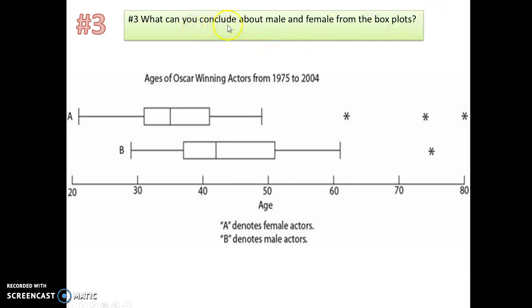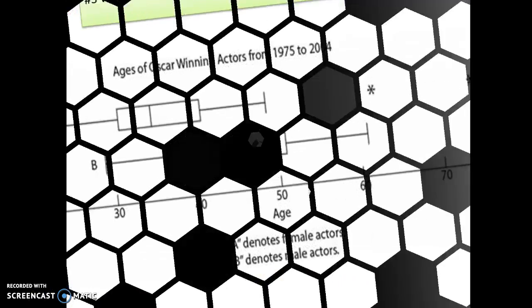And the third question, what can you conclude about male and females from the box plot? Looking at here, so this is female and male actors winning Oscars. So what can you tell me about them by looking at this box plot? To answer this, you will have to answer it in one long recording. So get ready and enjoy.